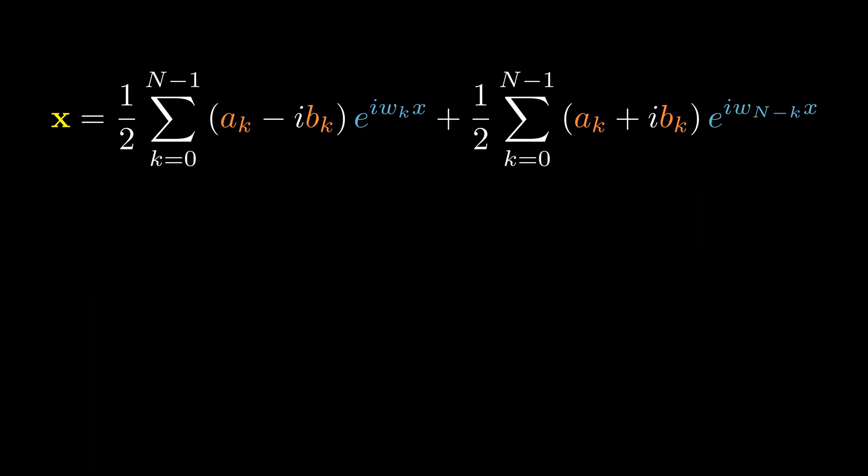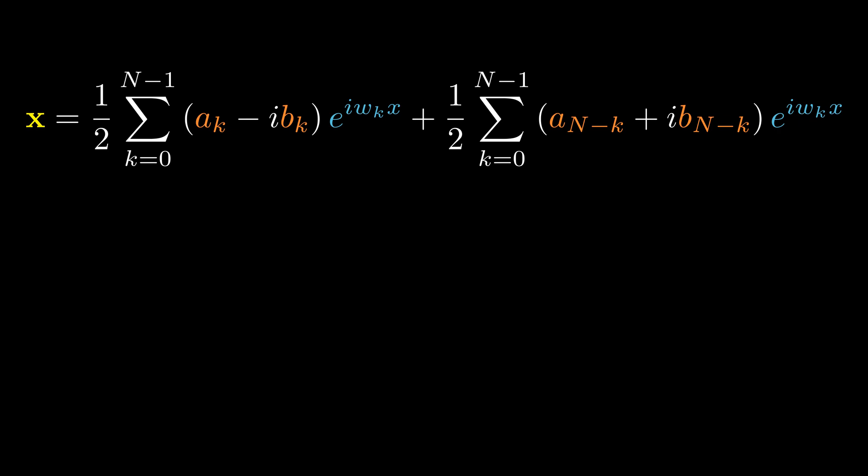Alright, so we can replace the negative omega k with a positive omega n minus k. Since summing over k from 0 to n minus 1 is the same as n minus 1 to 0, we can use change of variable so that we have a n minus k and b n minus k.